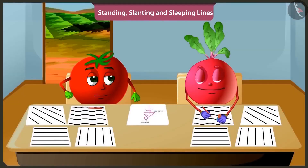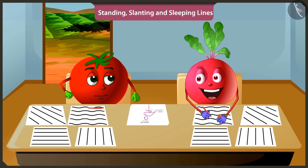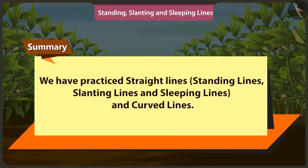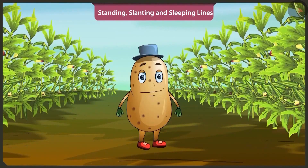Rightly said, Bittu. Now you practice making straight lines like standing lines, slanting lines and sleeping lines and curved lines. Now I must go. Okay. Bye. Children, today in this video we practiced straight lines like standing lines, slanting lines, sleeping lines. We also learned curved lines in this video. Now in the next video, we will practice making more interesting objects.